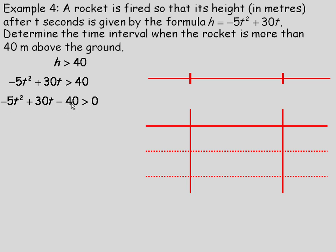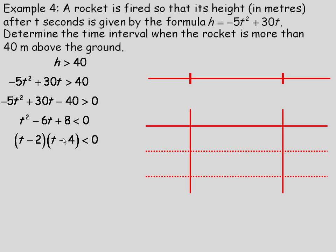The entire quadratic divides evenly by negative 5. Dividing: negative 5t squared divided by negative 5 is t squared; 30t divided by negative 5 is negative 6t; negative 40 divided by negative 5 is plus 8. Since we're dividing by a negative, the direction of the inequality changes from greater than to less than. So t squared minus 6t plus 8 is less than 0. To factor, we need two numbers that add to negative 6 and multiply to 8 — that's negative 2 and negative 4 — giving (t minus 2)(t minus 4).